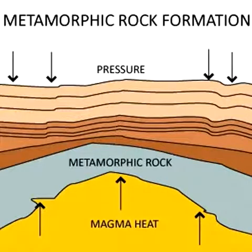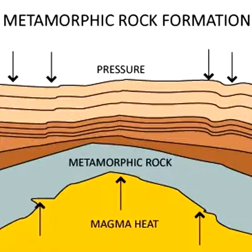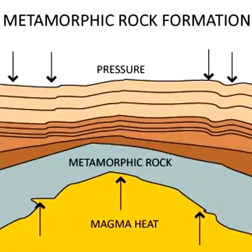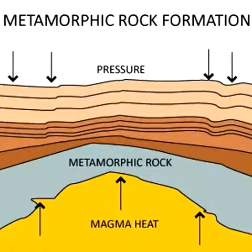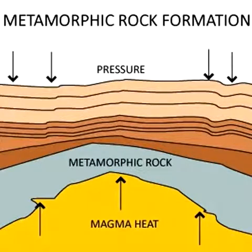Metamorphic rocks are created when other types of rock are altered by extremes of heat or pressure. For example, marble is formed when limestone is put under extreme heat and pressure, and slate is formed when clay is changed by pressure.